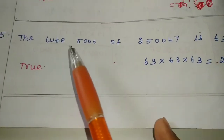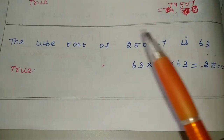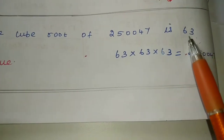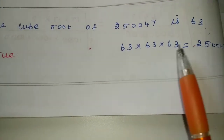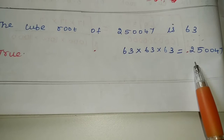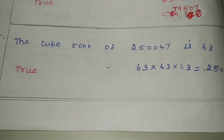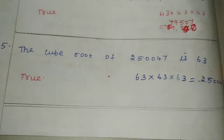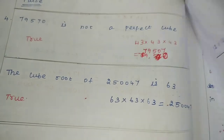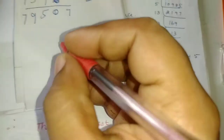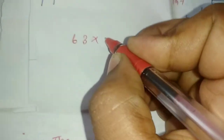The fifth one: the cube of 2500.47. We need to verify this value. Let's work through the multiplication to find the cube.